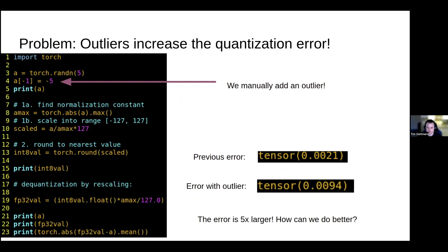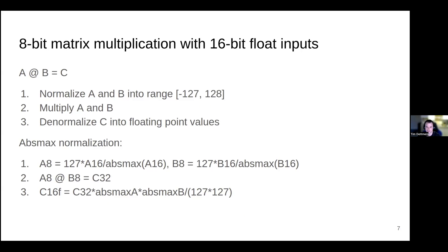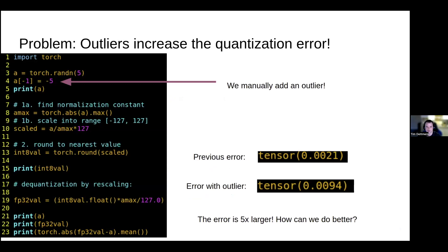But if you use this in a straightforward way, we get a problem. If we use just a single value for the entire tensor to find the absolute maximum value across the tensor, and if you have an outlier, this produces very large errors and prevents any effective quantization. In the code example, after inserting an outlier with a magnitude of minus 5, the previous error of 0.002 becomes 0.009, because the absolute maximum value is now 5 and that reduces the precision of all other values in the vector.